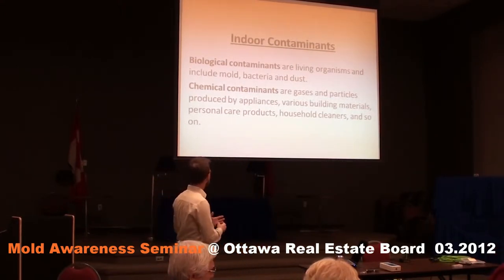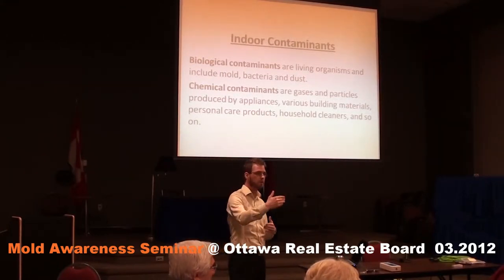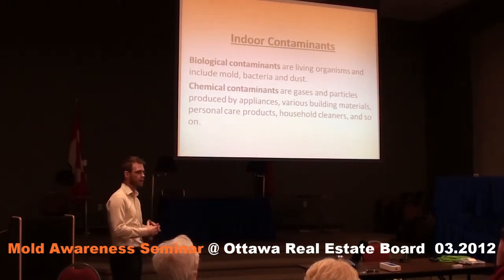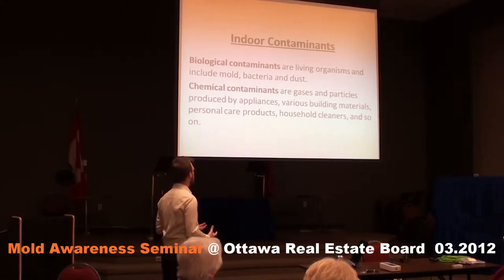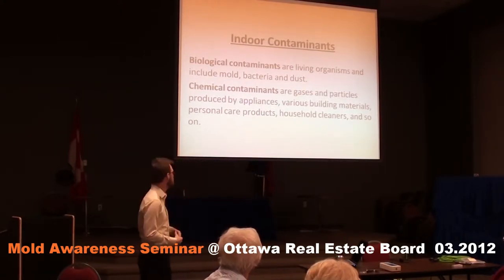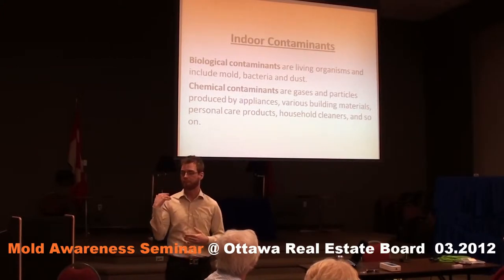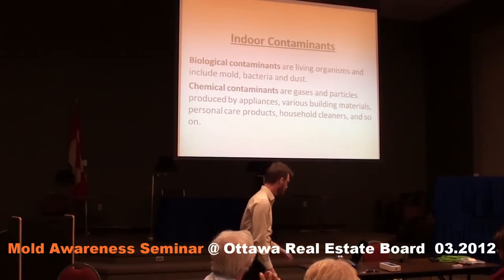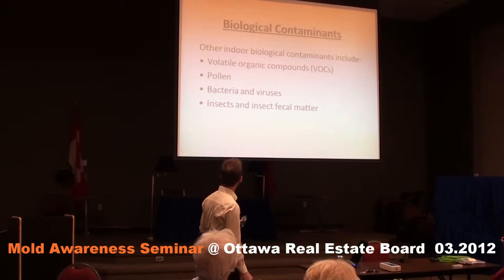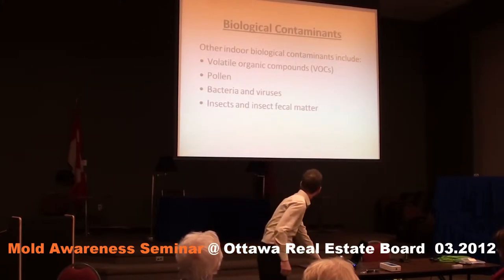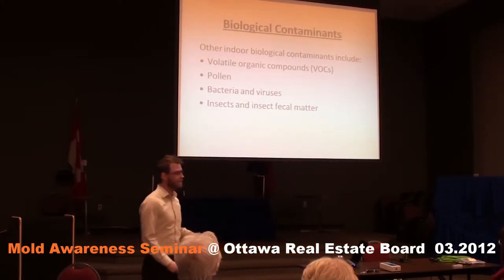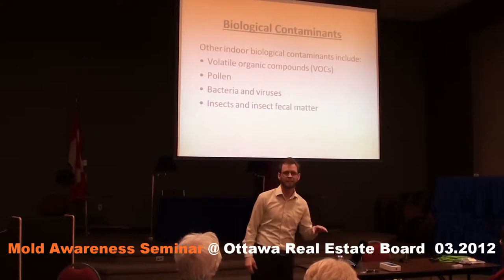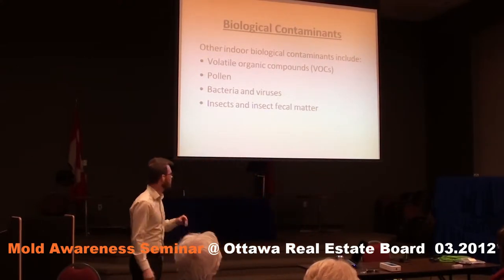Part of it could be biological contaminants, such as living organisms like mold, dust, bacteria, and other things floating around. The other things that could be in the air that cause a high particle count or poor indoor air quality are chemical contaminants, such as gases caused by different types of appliances, by people, by household cleaning products. And then the other types include all compounds — a fancy word for things that are decomposing — pollen, bacteria and viruses, and insects and insect fecal matter.